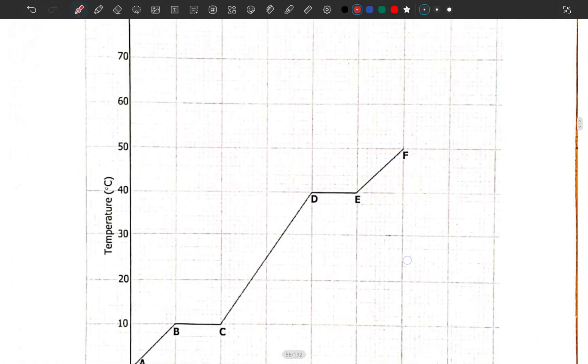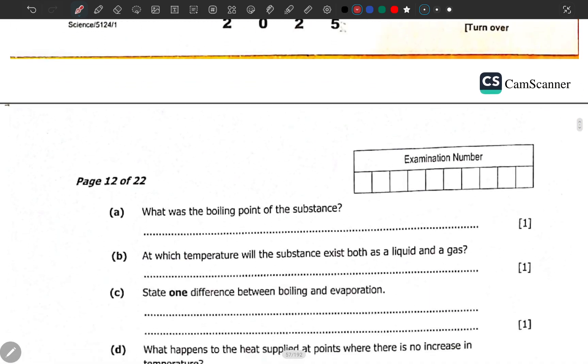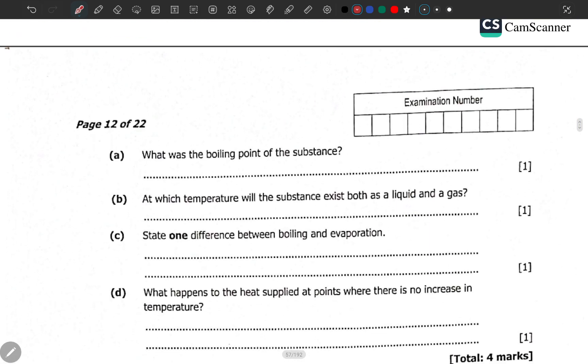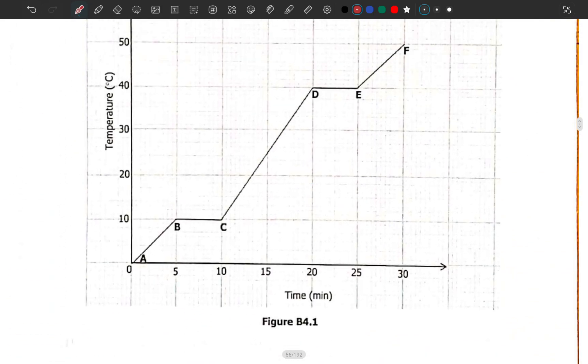Look at the diagram properly. We have the temperature starting from 0, 10, 20, 30, and then we've got time here in the horizontal axis. We've got letters A, B, C, D up to F. So in this region here it is solid, solid plus liquid, it is liquid, it is liquid plus gas, and here it's gas.